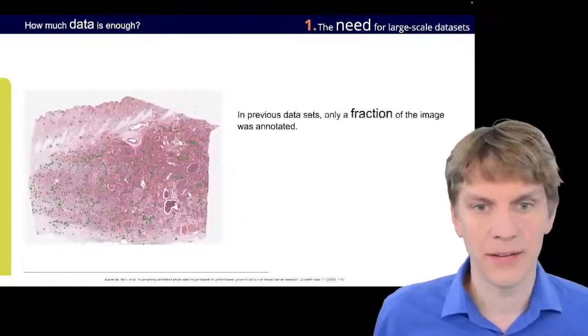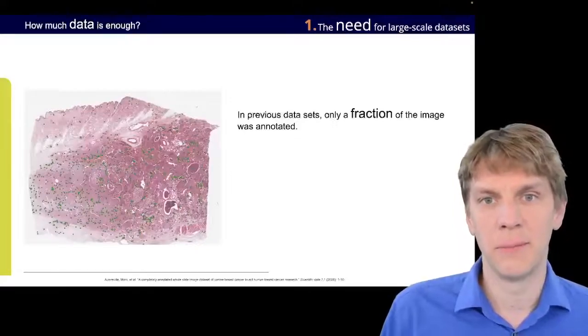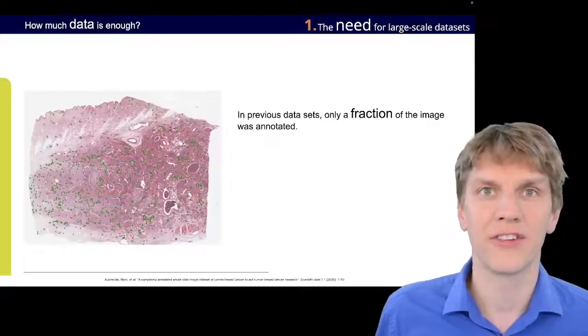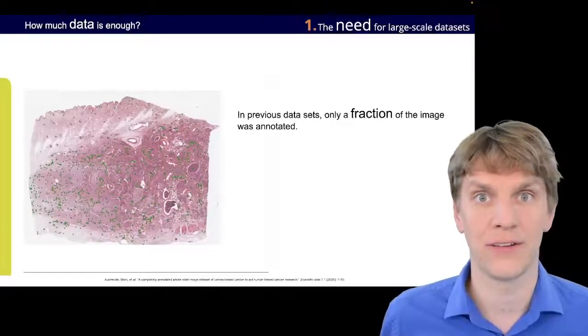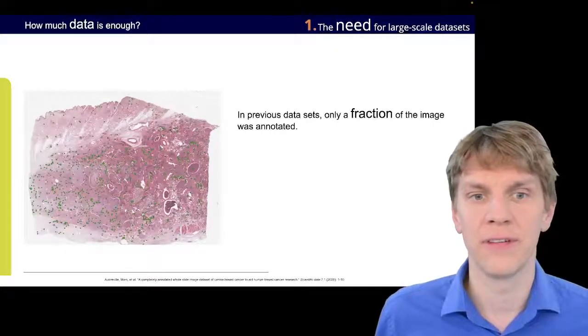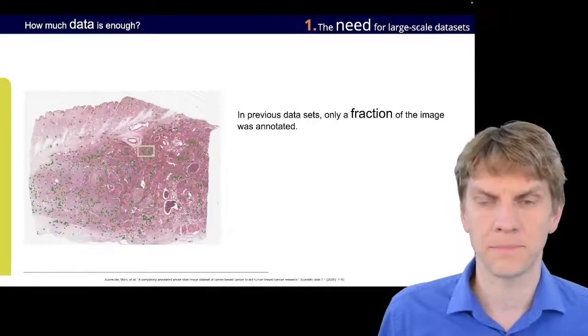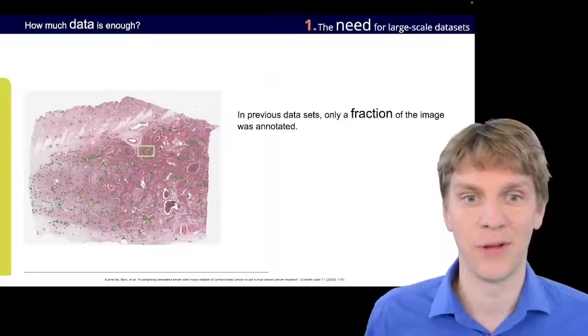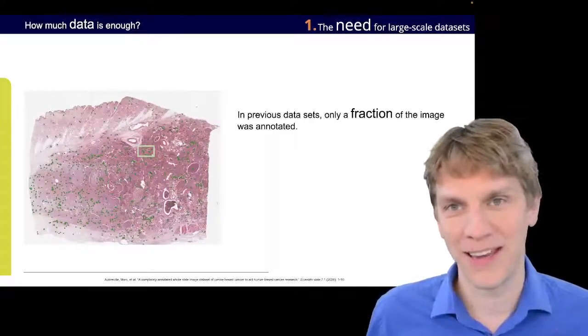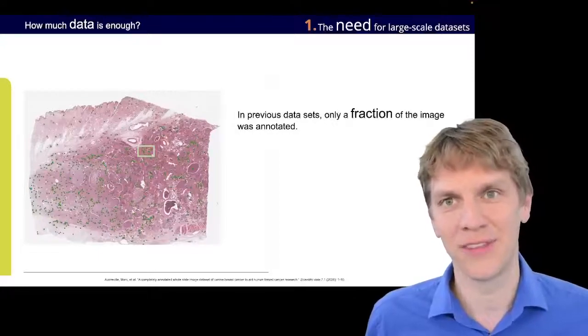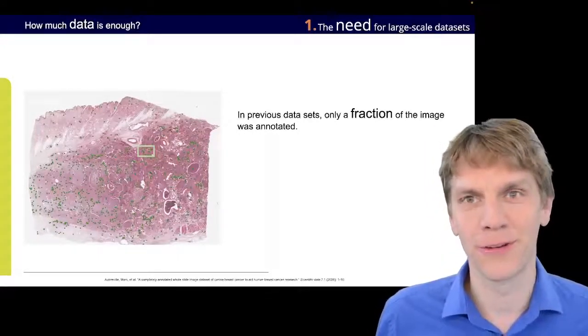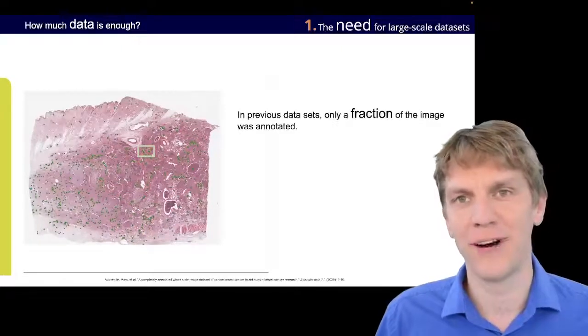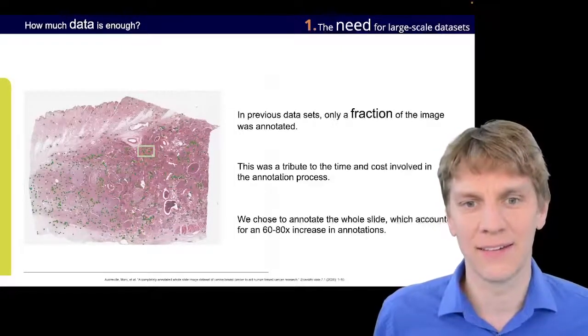So going back to that, what did we do different? So in previous datasets, only a fraction of the image was annotated. For instance, the fraction could look like this. And the whole rest of the image was not annotated. So we went through the pain of doing that, also doing that with a second annotator, also with a third if they didn't agree, also to aid that with some machine learning in order to find all the possible candidates.